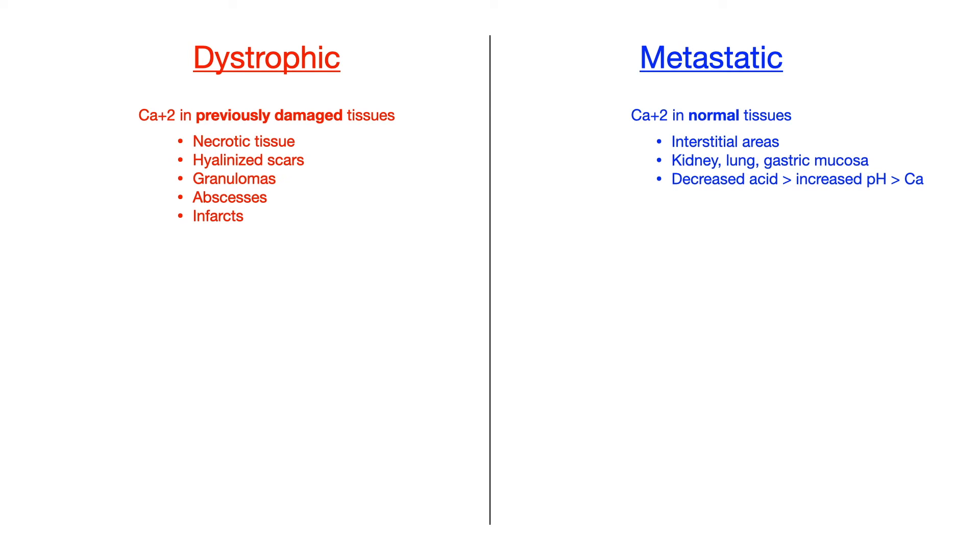In the case of metastatic calcification, you want to associate that with things like primary hyperparathyroidism, bone demineralization, increased bone resorption. So anything that's going to increase your bone resorption, such as bony metastasis, or Paget's disease, or multiple myeloma, that is all going to cause hypercalcemia in the setting of metastatic calcification.